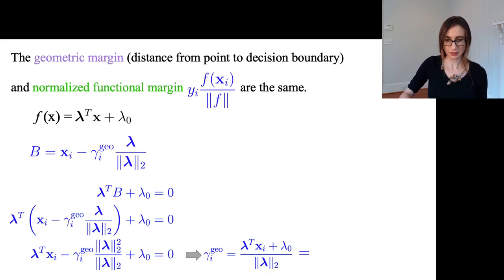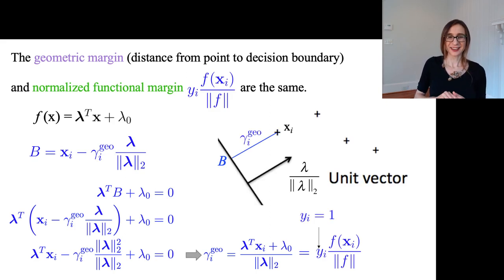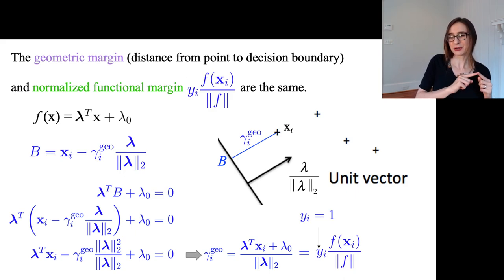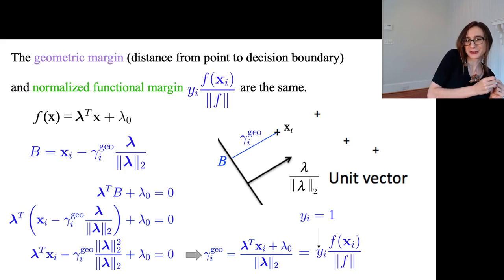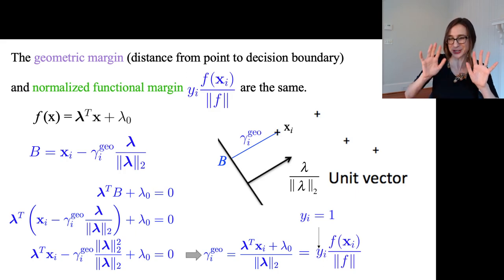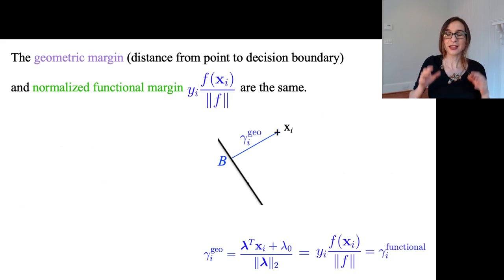What I got is shockingly the normalized version of F. I had chosen a positive data point, and the calculation would have been exactly symmetric for a negative data point — instead of walking negative the unit vector, I would have walked along the positive unit vector, and the additional negative sign would have been canceled out by the label Y. So what I've managed to show is that the geometric margin and the normalized functional margin are the same; that's why I can talk about the margin without specifying which of the two I mean.